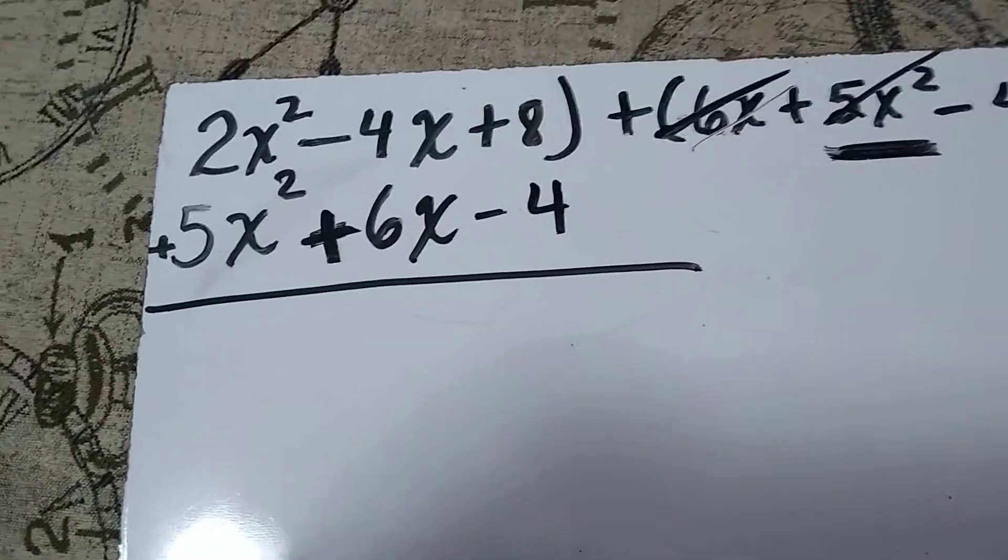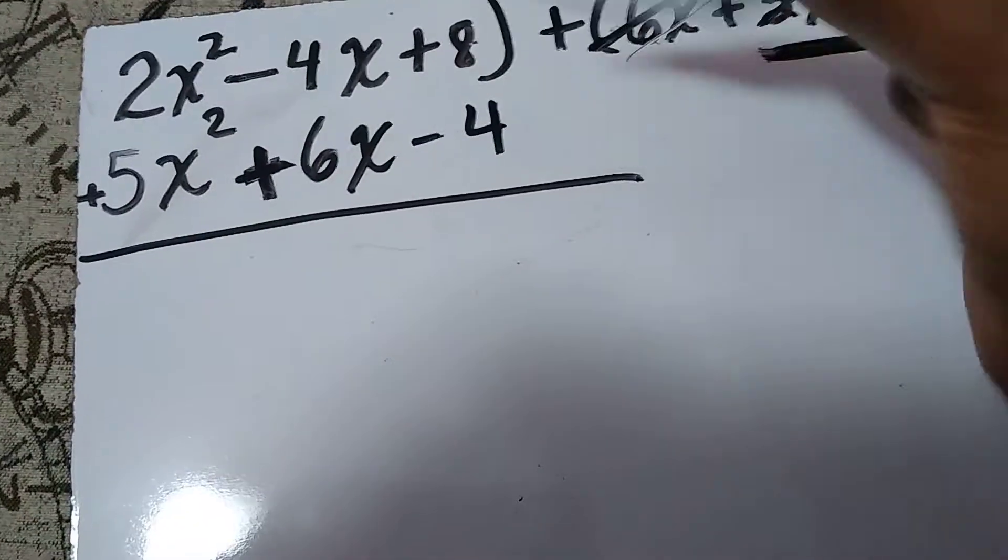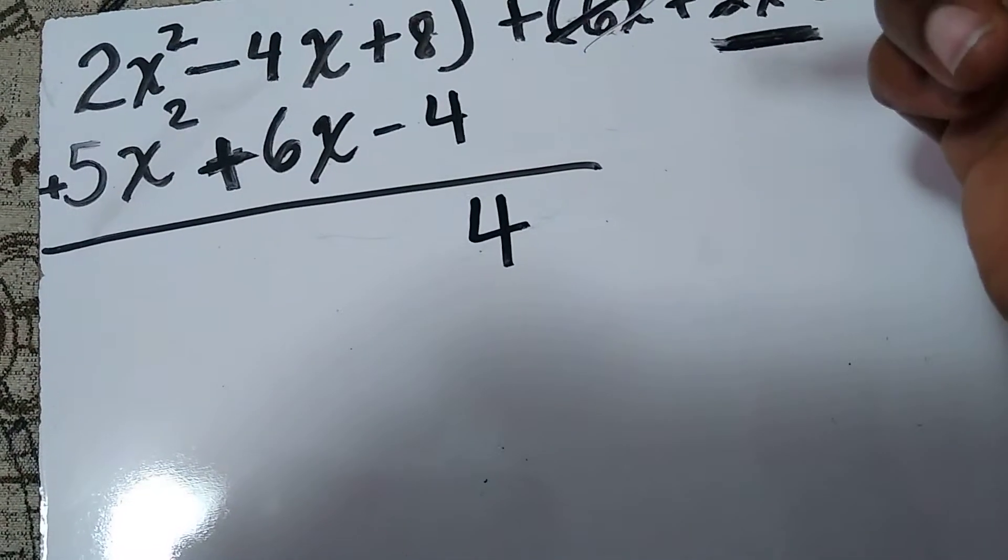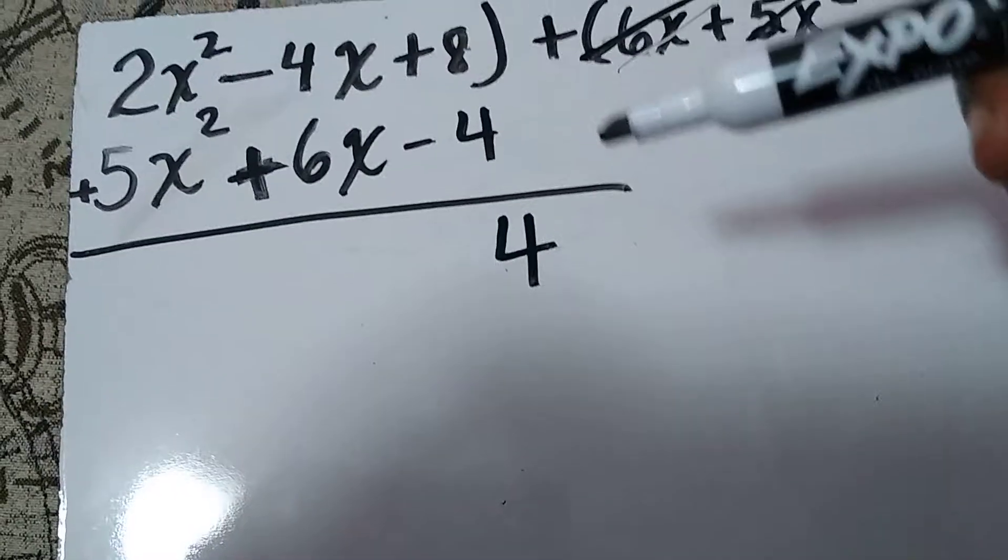So let's start with our constant. We have 8 - 4, which is going to be 4. Or I could say 8 plus a negative 4, which is going to give me a positive 4.